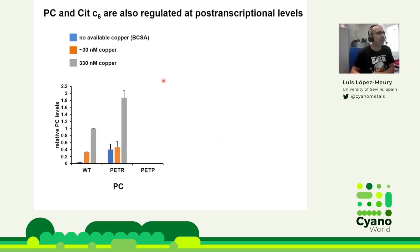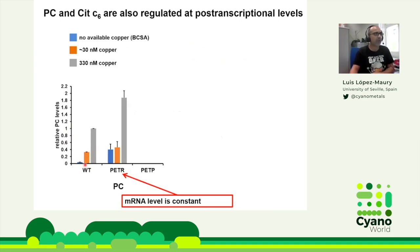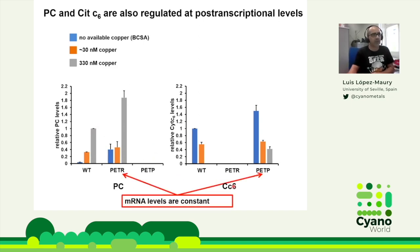We also noticed that protein levels don't always correlate with mRNA levels. For plastocyanin in wild type, there's no protein without copper, a bit more with low copper, and much more in the presence of copper. In the PETR mutant, there is always some plastocyanin even without copper, and much higher when copper is added. In the PETP mutant, the protein cannot be detected. For cytochrome C6, we see clear down-regulation in the wild type, and almost the same regulation in the PETP mutant even though the mRNA level stays constant — suggesting an additional post-translational level of regulation.